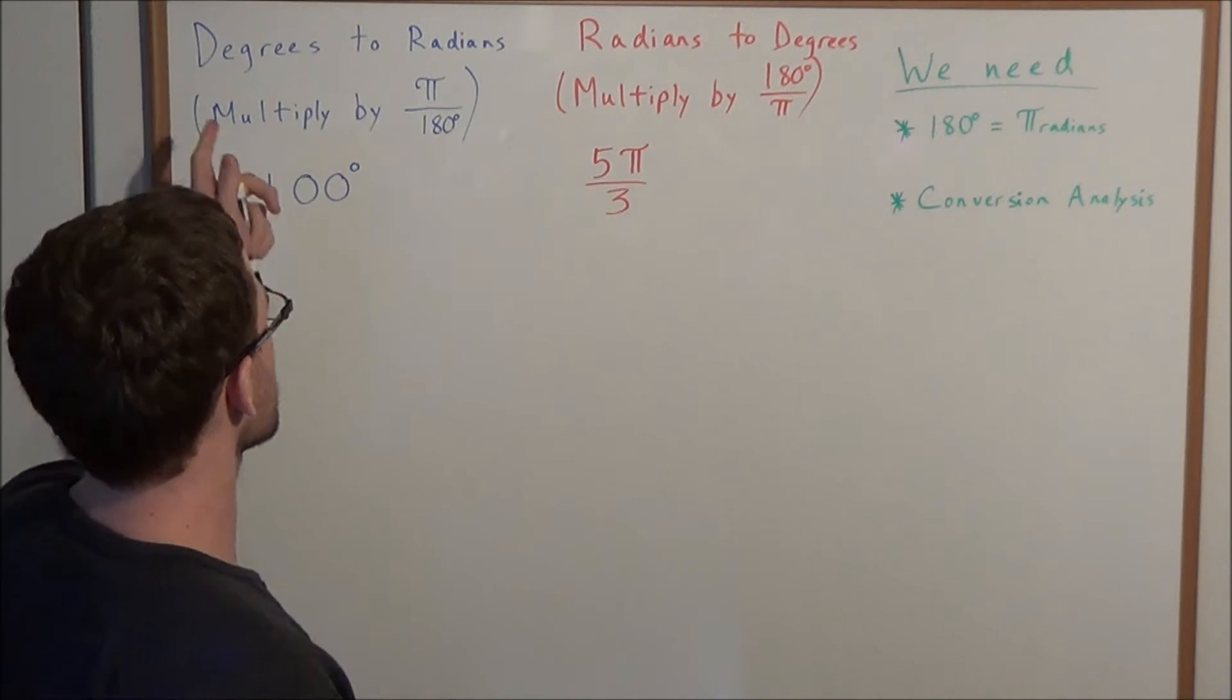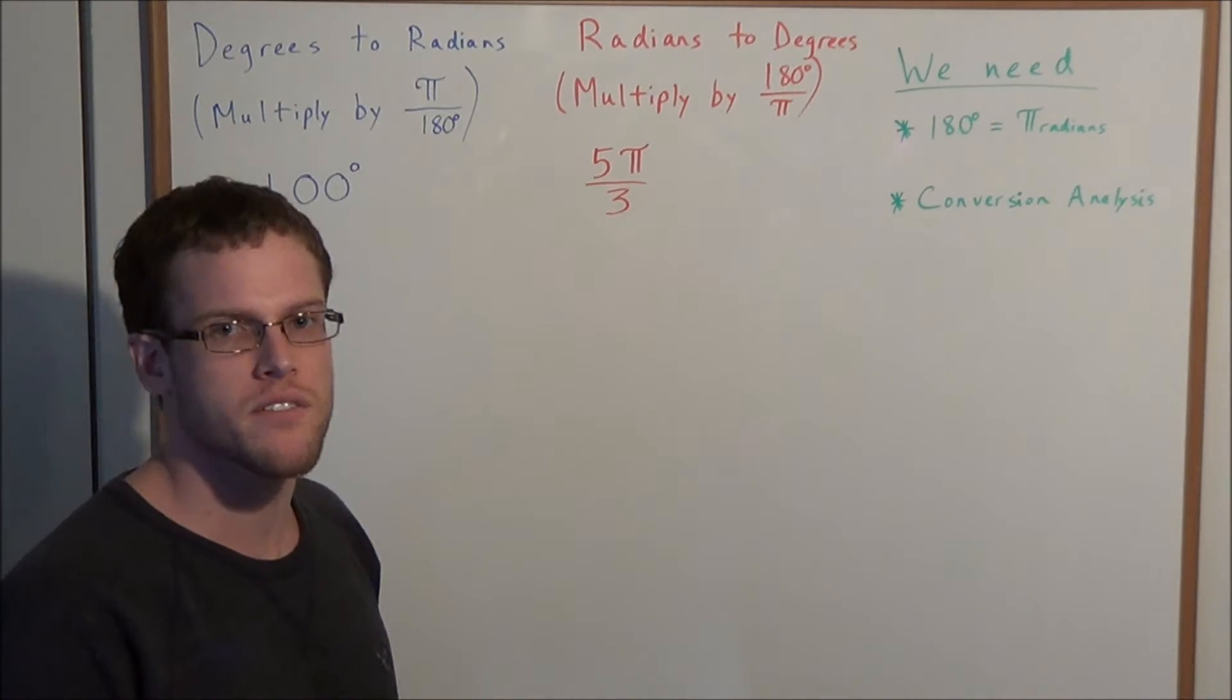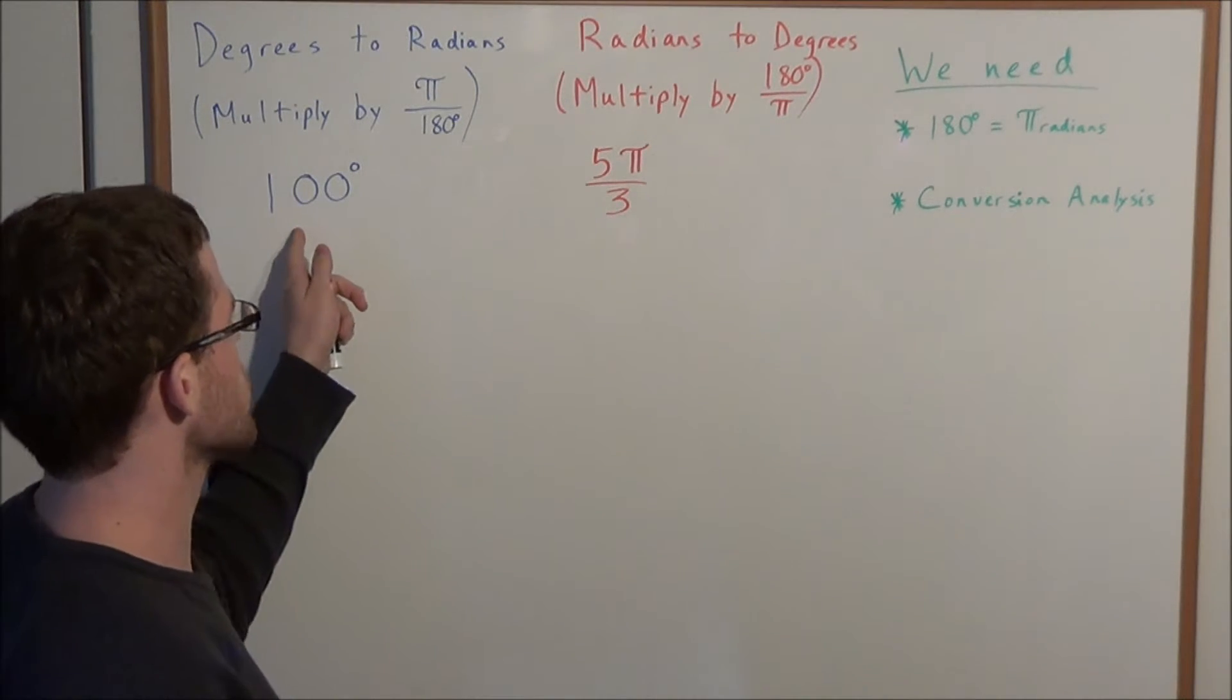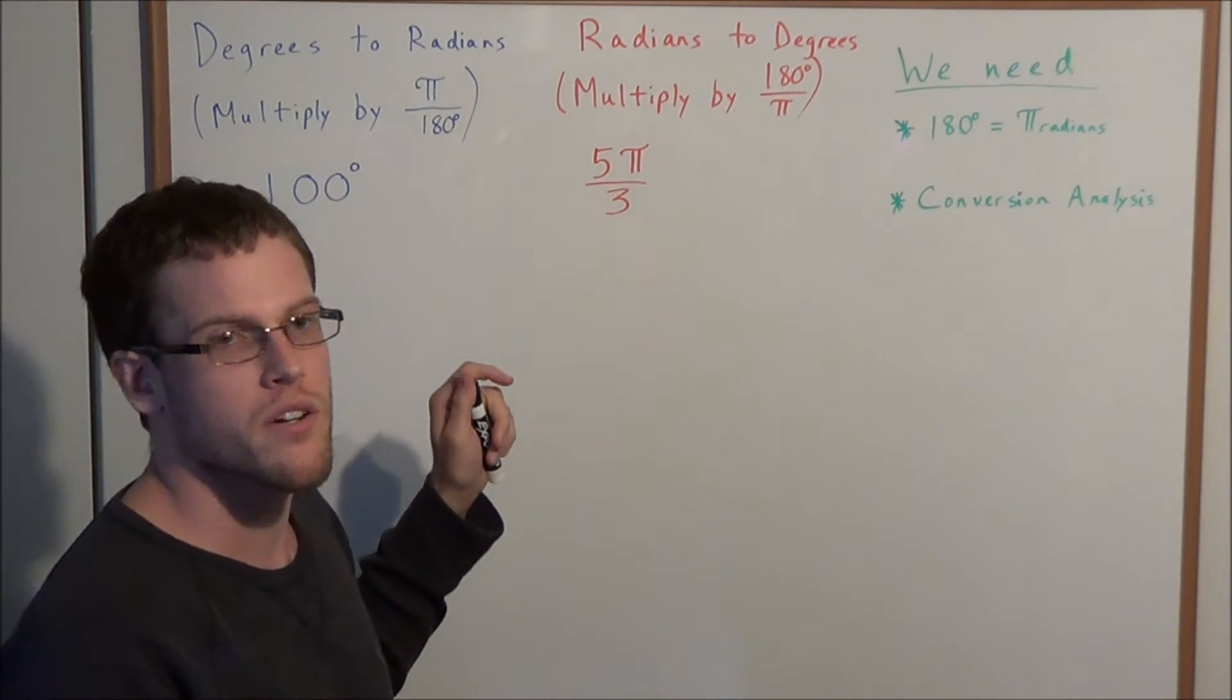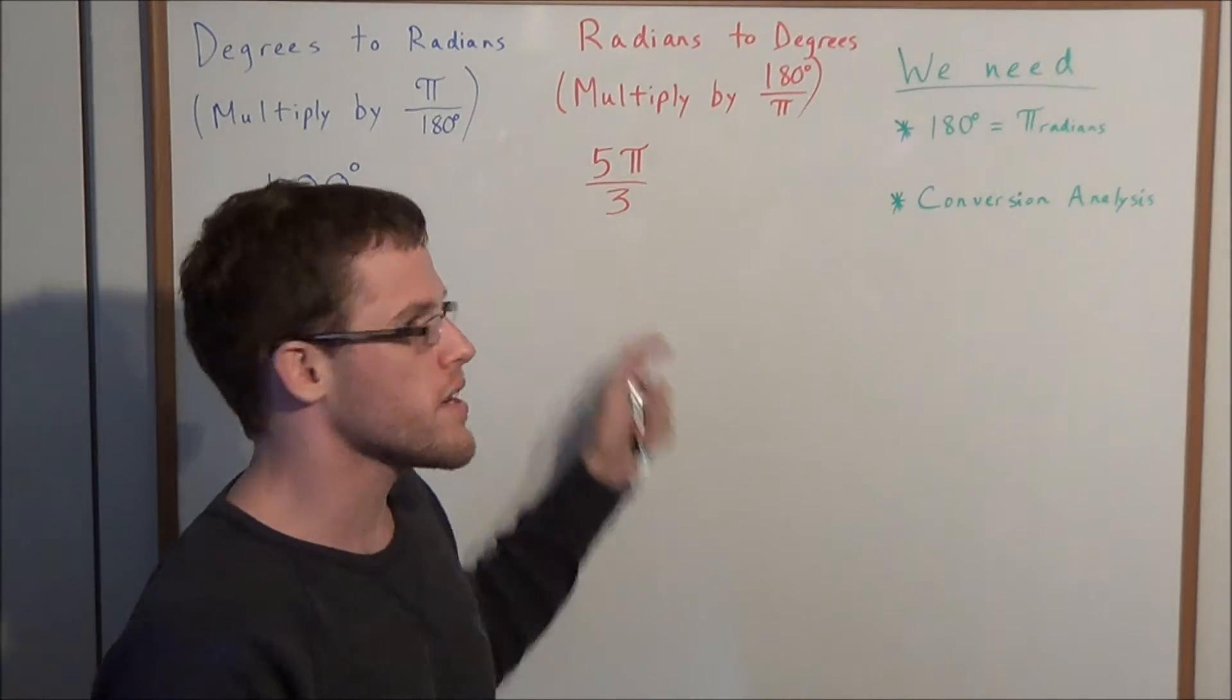In particular, I want to look at problems where we convert from degrees to radians and radians to degrees. So we're going to convert 100 degrees to radians, and we're going to convert 5π over 3 radians to degrees.